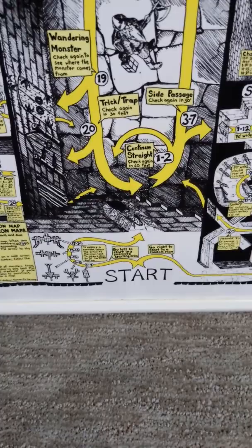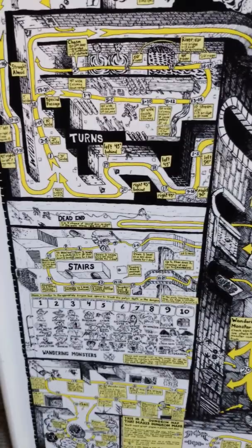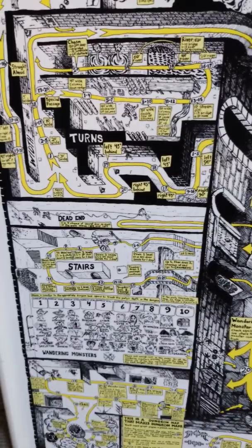You start down here at the bottom where it says 'start' and that tells you your entrance. Then you roll a d20 and each roll takes you to a new room. In that room you roll another d20 and figure out what exit you're going to. That place gives you more information about what the turn is like or what the stairs are like, and you continue to follow this from room to room, building your dungeon as you go.